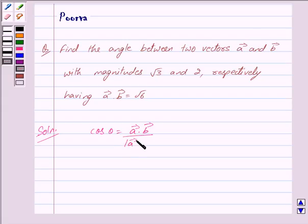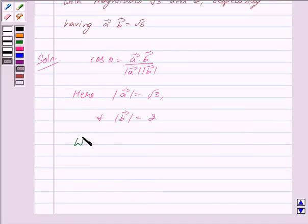Here we are given that the magnitude of vector a is root 3, so mod of vector a equals root 3. The magnitude of vector b is 2, so mod of vector b equals 2. We are also given vector a dot vector b equals root 6.